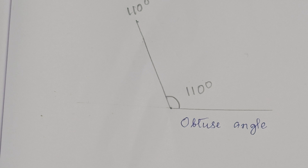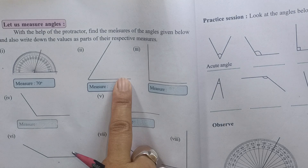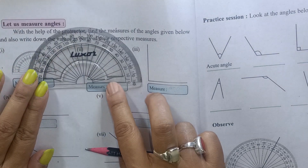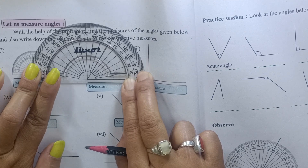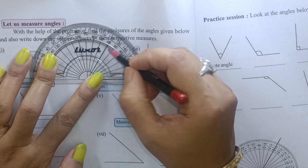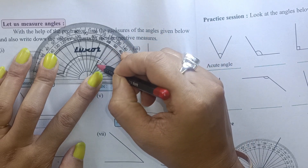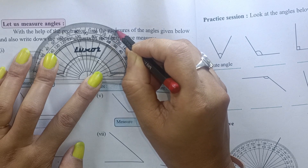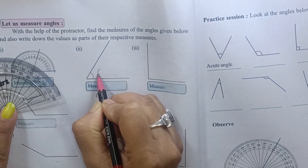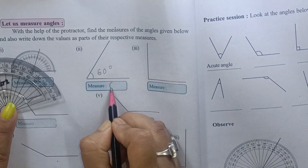We come back to the page in the book and now we will measure all the angles given in the book and place the value. Let us now measure this angle — take the protractor and place this point of the protractor here. This line is at 60 degrees, match the line also. It is 60 degrees, so we write here: measure 60 degrees.